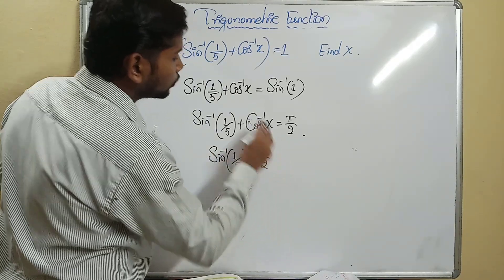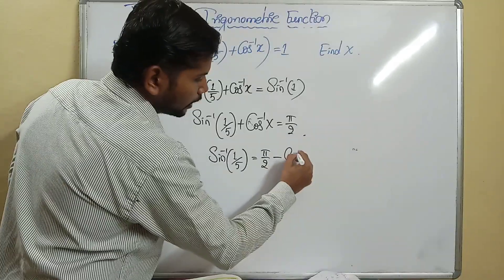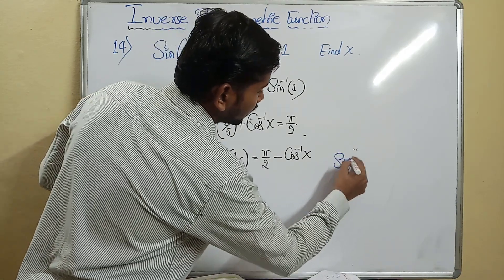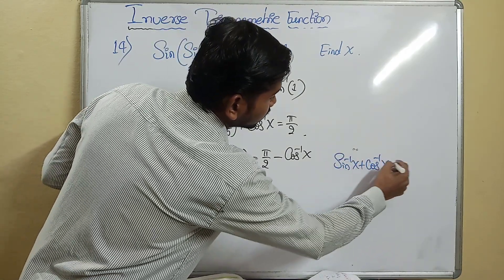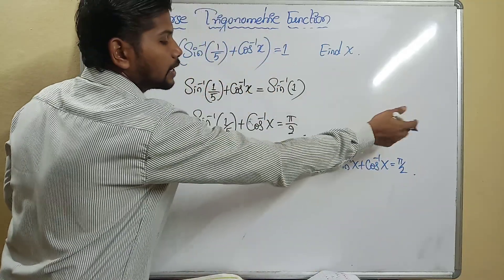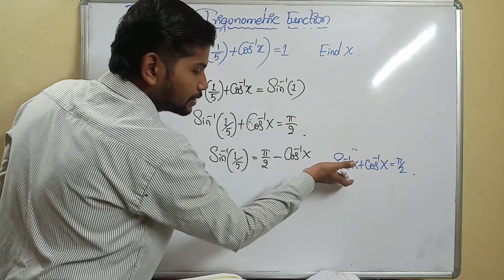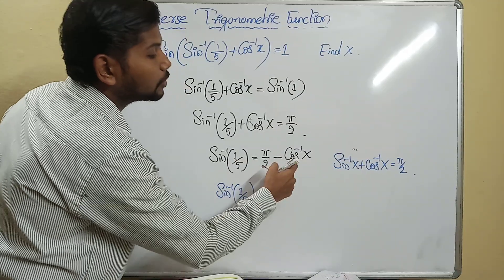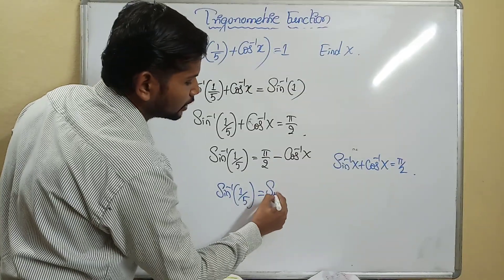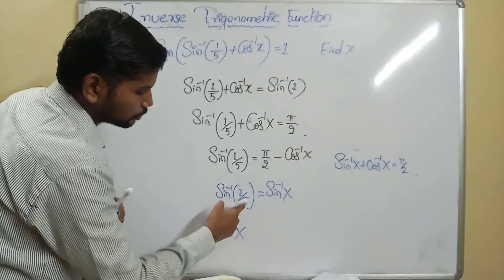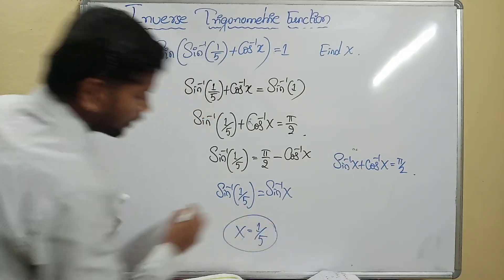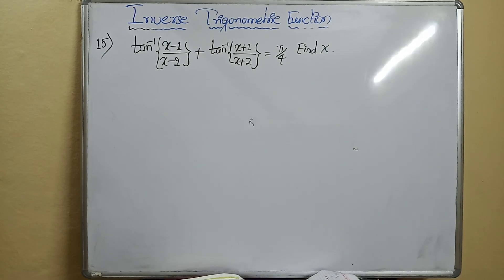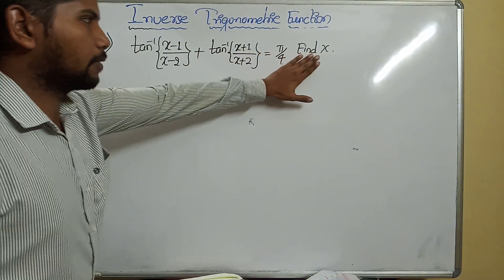The cos inverse term on the right-hand side: pi by 2 minus cos inverse of x. Using the property sine inverse of x plus cos inverse of x equals pi by 2, we know pi/2 minus cos inverse of x is sine inverse of x. Therefore sine inverse of 1/5 equals sine inverse of x, giving x = 1/5.